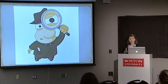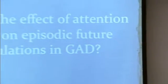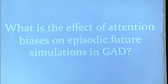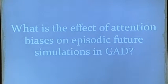We know that attention biases affect emotional processing in the present moment, but what we don't know is how they affect processing of future events. Specifically, that brings me to my question: what is the effect of attention biases on episodic future simulations in Generalized Anxiety Disorder? This has not been looked at — how these biases towards threatening information affect this type of future thinking in Generalized Anxiety.